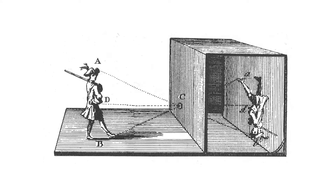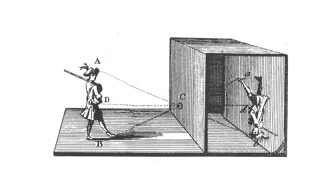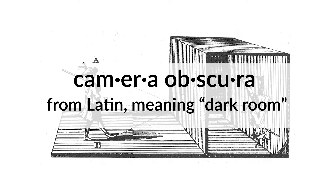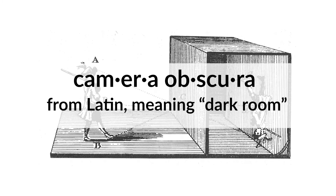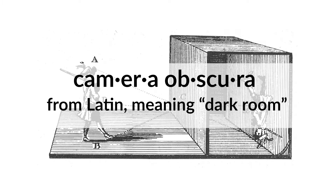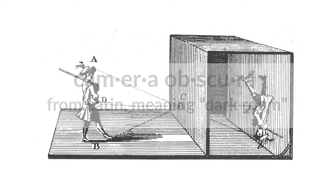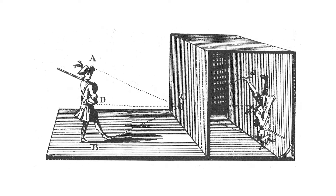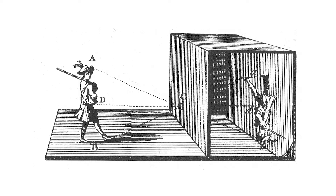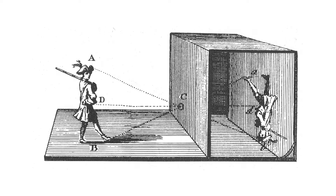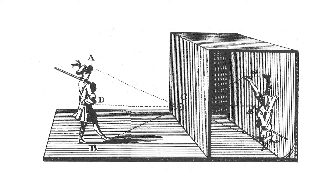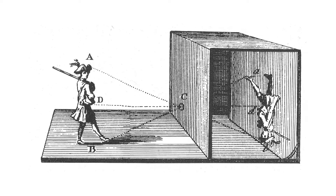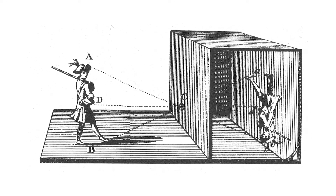The Camera Obscura was the very first version of the cameras we use now. Camera Obscura is Latin and means dark room, and that is exactly what the first Camera Obscura was. The first version of the Camera Obscura was a completely dark room with a tiny hole in one wall. All the light from outside could only go through that tiny hole. The light would project a picture of the outside world on a white wall across from the hole. The picture or image would look exactly like what's outside, except it was flipped upside down and backwards.